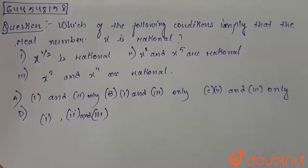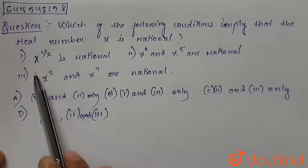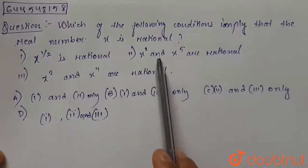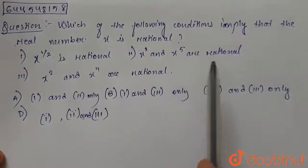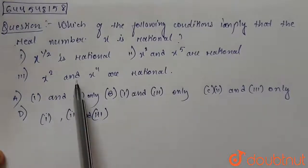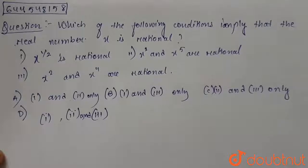Which of the following conditions imply that the real number x is rational? The first condition is x to the power half is rational. The second one is x square and x to the power four are rational. And we have four options given for the same.